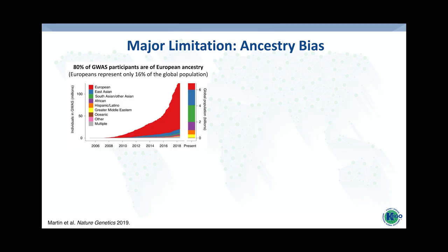What are the major limitations of polygenic modeling and why is this becoming a controversial topic? The major limitation is ancestry bias. A 2019 paper from Mark Daly's group makes a very strong point, demonstrating that roughly 80 percent of GWAS participants up to 2019 are of European ancestry — not reflective of global ancestry, since only roughly 16 percent of global populations is of European ancestry.